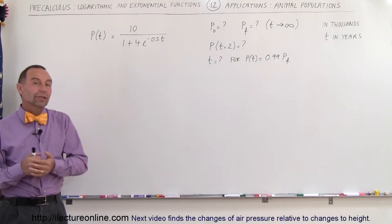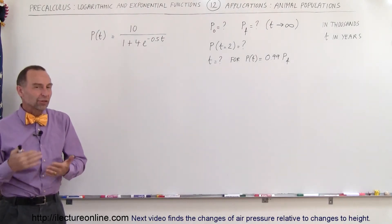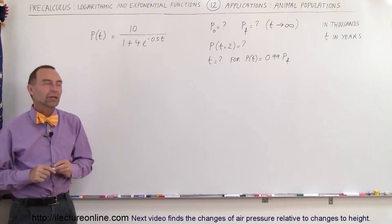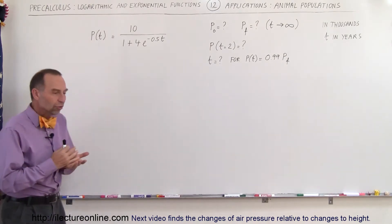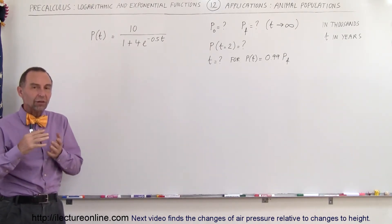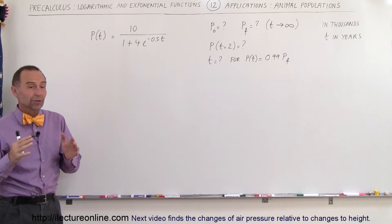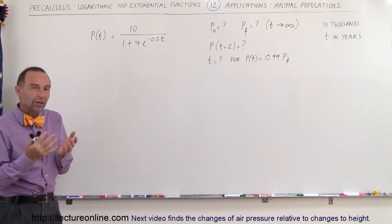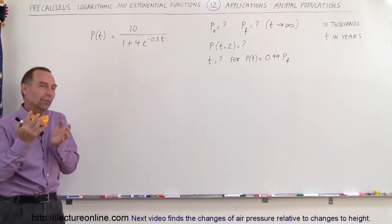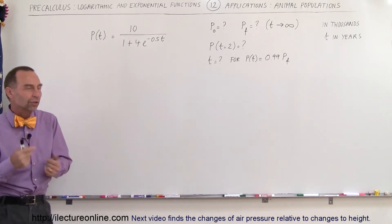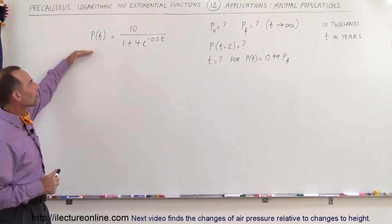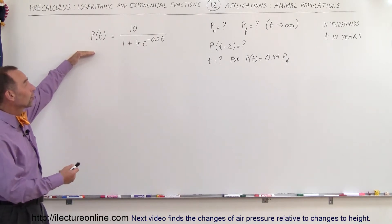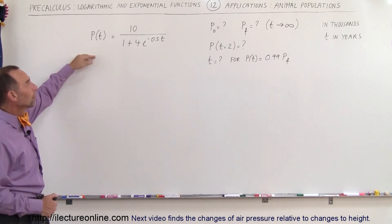Welcome to our lecture online. Another nice application for exponential functions is keeping track of animal populations. Populations in animals will usually adjust themselves to the environment — if there's plentiful food, the animal population will increase; with many predators, a population will decrease, back and forth like that. Here's an equation that might describe the amount of fish in a lake or the amount of deer in the forest.